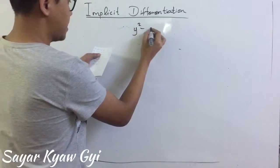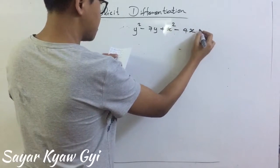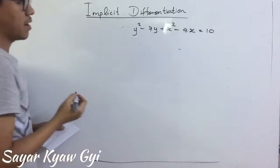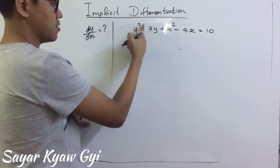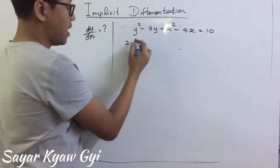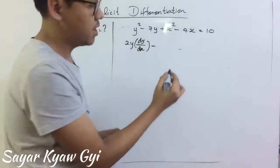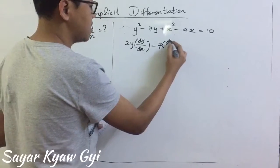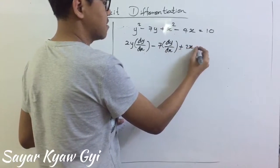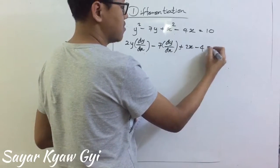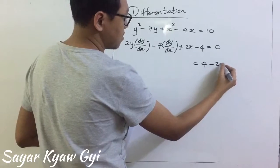The second example is y squared minus 7y plus x squared minus 4x equal to 10. We are going to find dy by dx. So, for y squared, it will be 2y dy by dx. And don't forget to write dy by dx. Minus — when you differentiate 7y, you get 7 and dy by dx. And x squared, you get 2x. Then 4x gives minus 4, equal to 0. We are going to move it to the other side, so it will be 4 minus 2x.